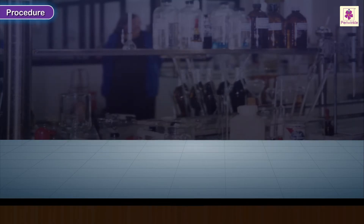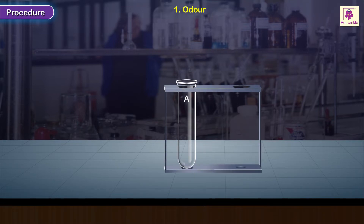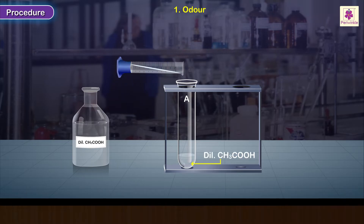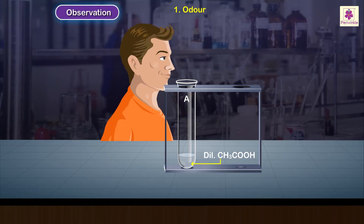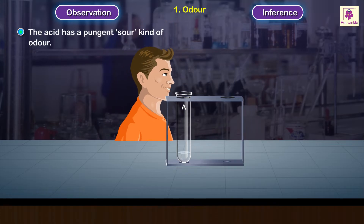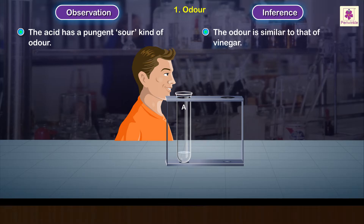Procedure 1 – Odor: Take a test tube and label it A. Take about 2 ml of dilute ethanoic acid in the test tube A and cautiously smell it. Observation and inference: the acid has a pungent, sour kind of odor. The odor is similar to that of vinegar.